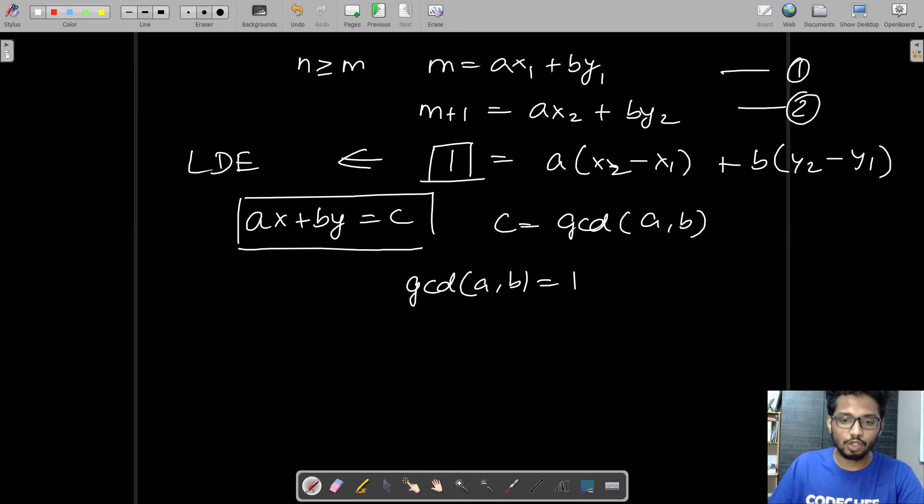So how to find the least value, that is n? According to Chicken McNugget's theorem, if ax + by is the form in which some number should be represented, then the largest value which cannot be represented in this form would be ab - a - b.